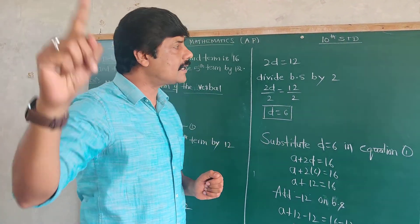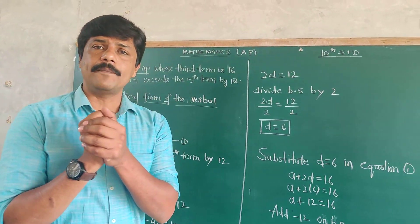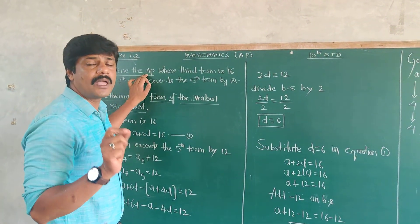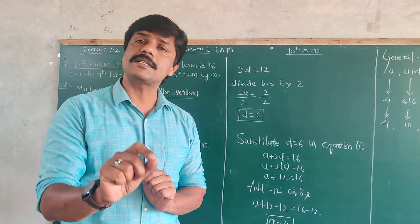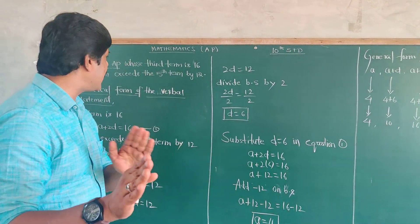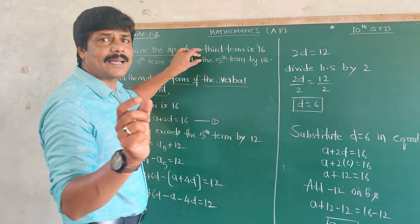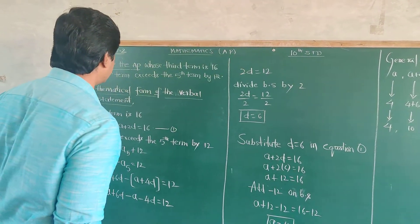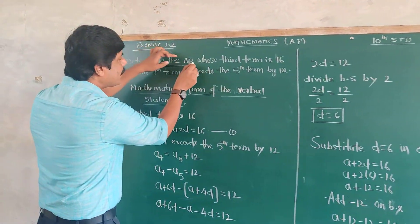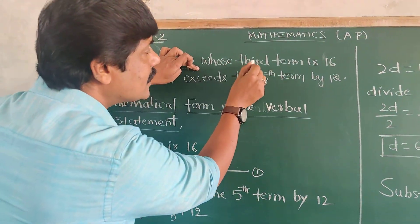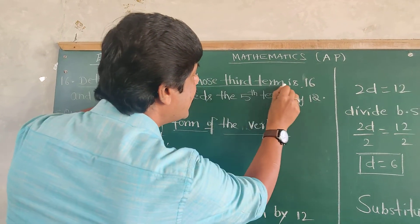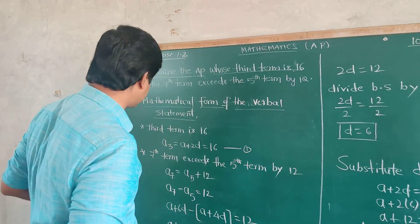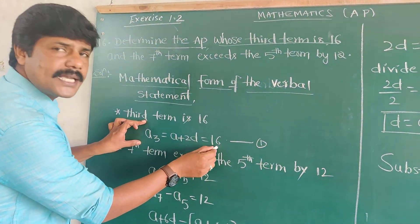Our main goal is to find A and D, where A is the first term and D is the common difference. Once you find A and D, you can determine the AP. How do you find A and D? It's very easy — there will be some clues given in the problem. You have to find the clues and the conditions given. The first clue is: whose third term is 16.